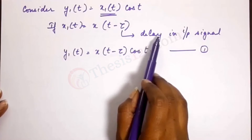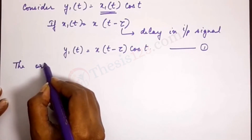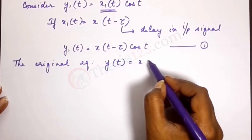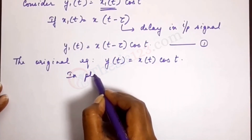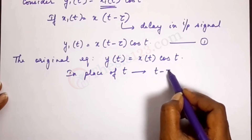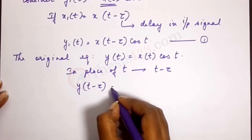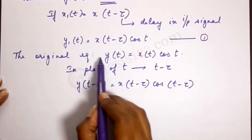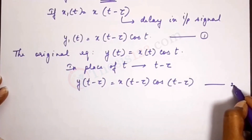Now let's apply the delay to the original equation. The original equation is y(t) = x(t)·cos(t). Wherever t appears in this equation, we substitute t − τ. So y(t − τ) = x(t − τ)·cos(t − τ). This is equation 2, where the delay is applied to the entire equation — both input and output.